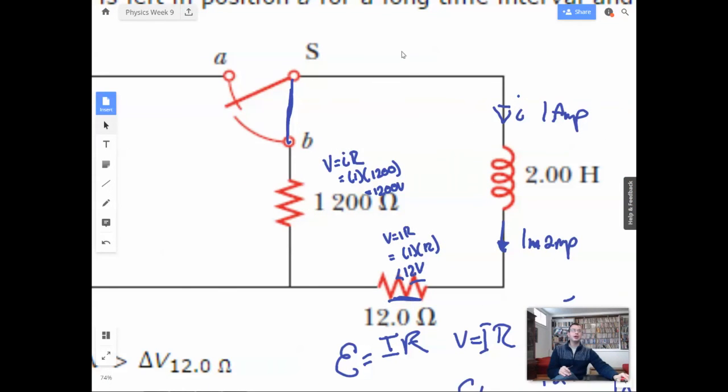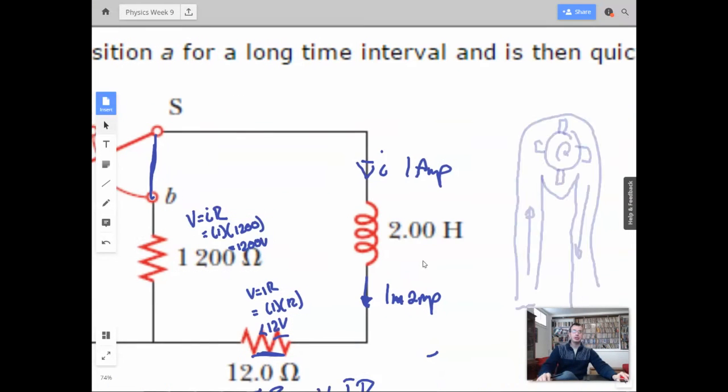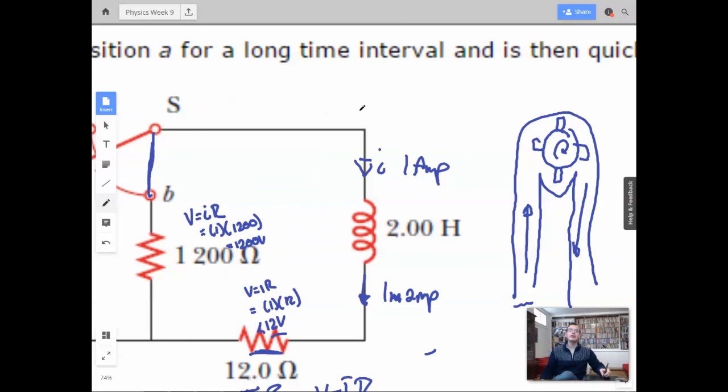So now we're going to use Kirchhoff's voltage law. Basically, if you start at any point, you add them all together and you're going to get zero. So the way I'm going to look at this is we're going to have voltage across the inductor, V_L, minus 12 volts minus 1200 volts equals zero. So voltage across the inductor will actually equal 1212 volts. Because the inductor has to provide the voltage difference to create both the voltage drop across the 12 ohm and across the 1200 ohm.